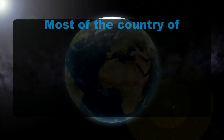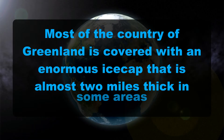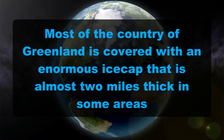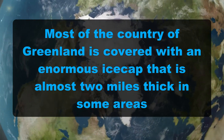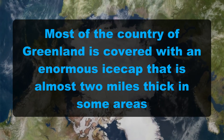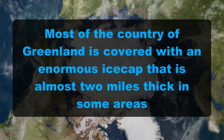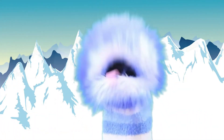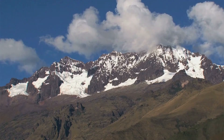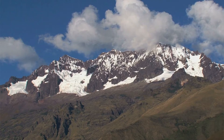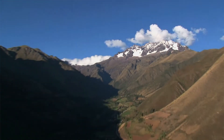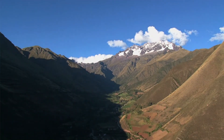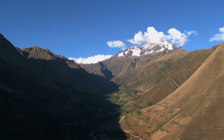Most of the country of Greenland is covered with an enormous ice cap that is almost two miles thick in some areas. There are also smaller glaciers in the Rocky Mountains of North America, as well as in the European Alps, the Andes of South America, and even at some mountainous points along the equator.